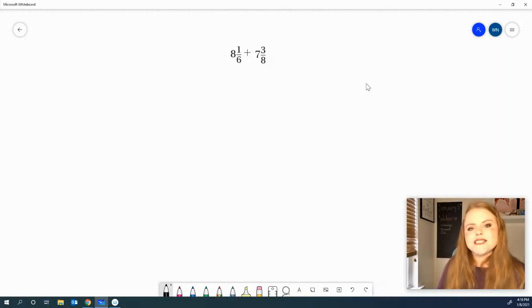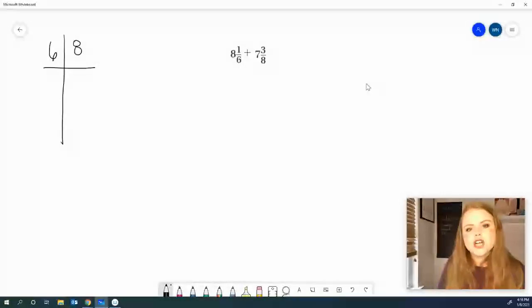We've got 8 and 1/6, plus 7 and 3/8. So, the first thing you should notice is that those denominators do not match. So, let's start by making our T-chart. With our T-chart, we're going to list out our multiples. And it's your turn to do this problem.